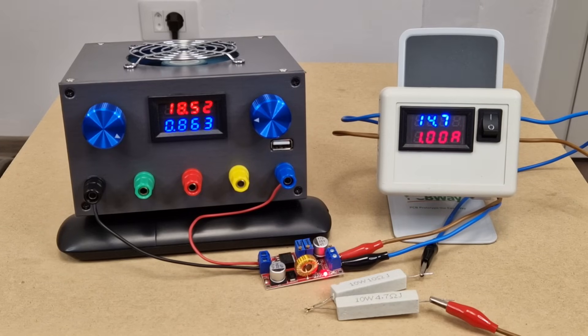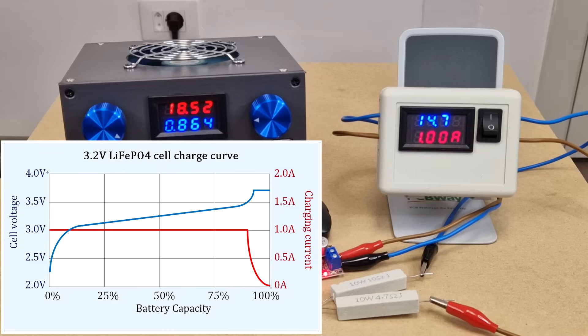But this is an extreme condition. In reality the current consumption is decreasing while the battery is getting charged. At 14.7V is the final part of the charging process, the constant voltage mode, and the battery draws only a few milliamps.